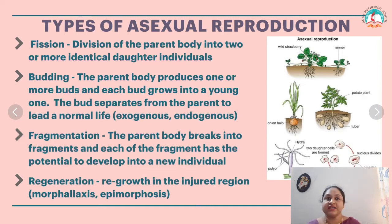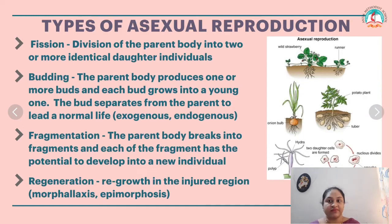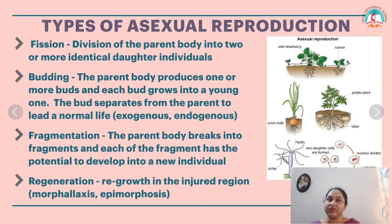In morpholaxis, the whole body grows from a small fragment. Examples of morpholaxis include hydra, planaria, and lizard.